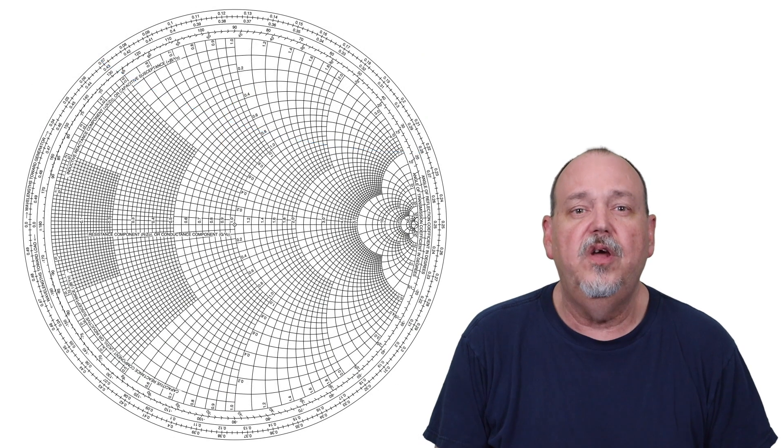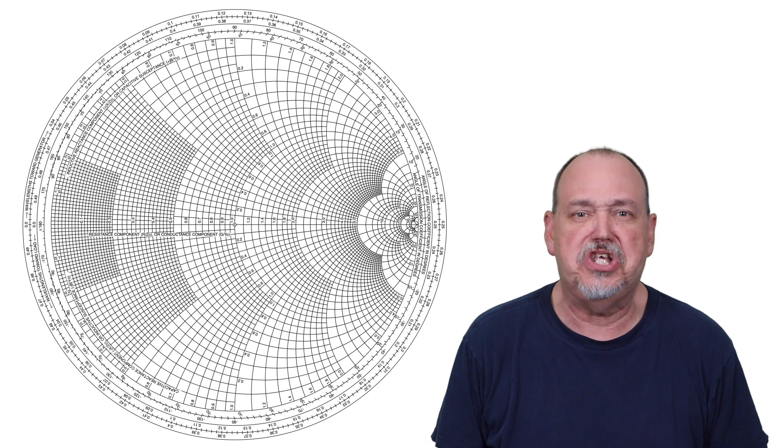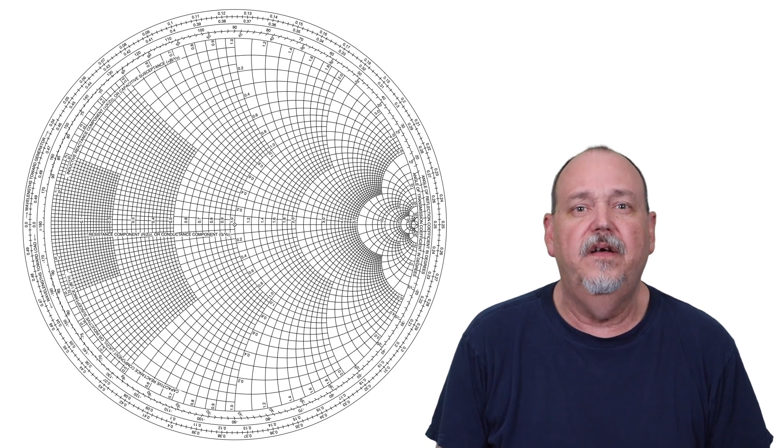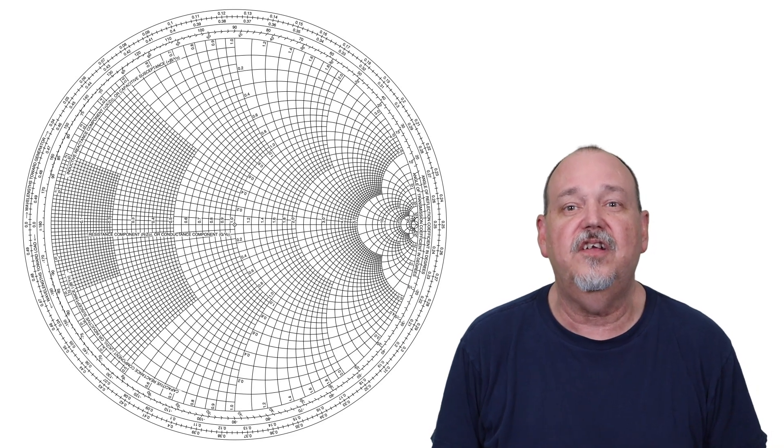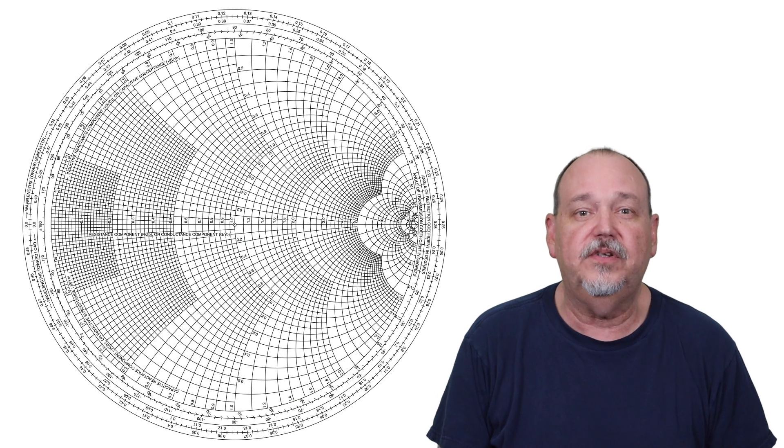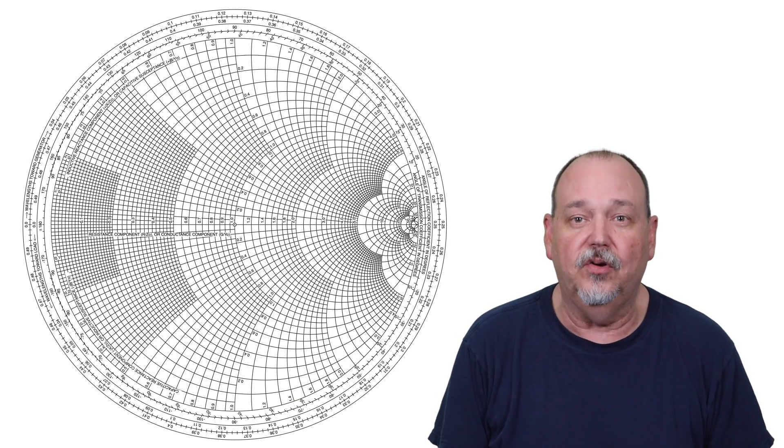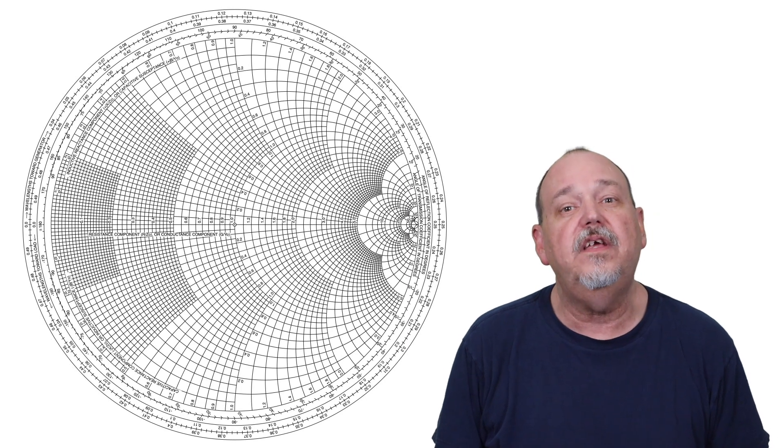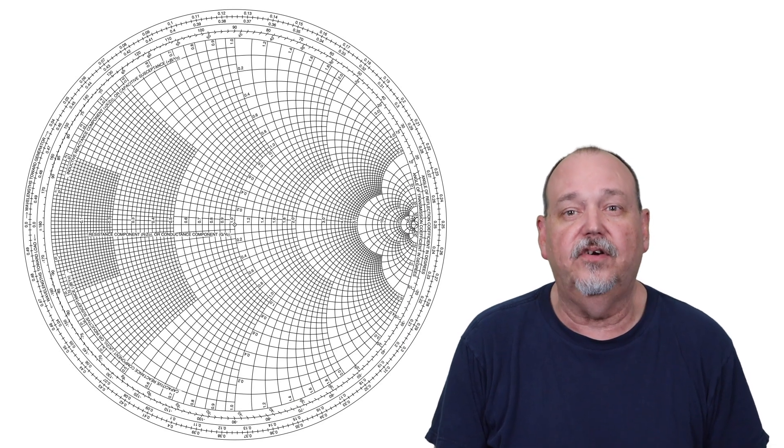So, as hams, when would we actually want to use a Smith chart, say, in setting up an antenna? The truth of the matter is you probably won't. What it does do for us is gives us an understanding of how the resistive and reactive components of our transmission lines and matching networks impact our impedance and SWR. One more thing you can use the Smith chart for is to see how changing the length of your transmission line can impact your complex impedance.